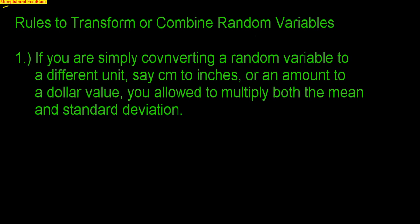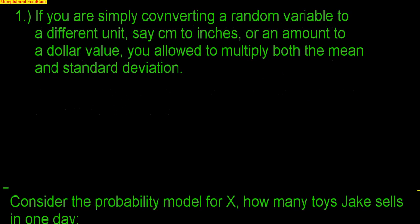First rule: if you're simply converting a random variable to a different unit — say centimeters to inches, or an amount to a dollar value — you are allowed to multiply both the mean and the standard deviation. So if you're talking about just one random variable and you're converting it, multiply all you want.